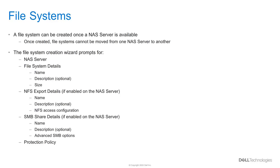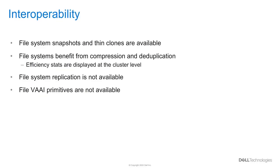Once a NAS server is available, file systems can be created. Once a file system is created, it cannot be moved to another NAS server. To create a file system, you need to specify the NAS server, the name of the file system, and the size. Once done, the user can create an NFS export or SMB share, depending on what protocol or protocols are enabled on the NAS server. A protection policy can also be set if desired. Within the file system, snapshots and thin clones can be taken. File systems benefit from compression and deduplication. However, replication is not supported in file systems, nor are vVol file primitives.